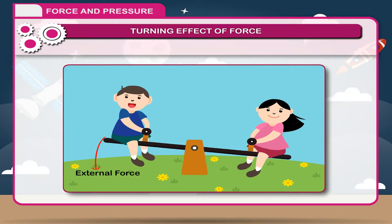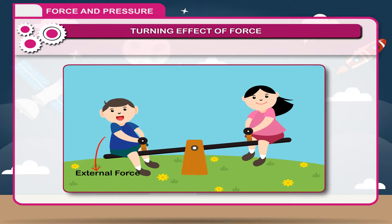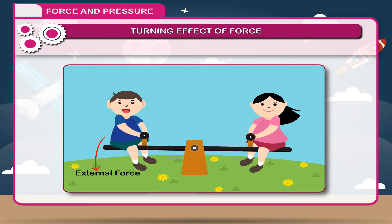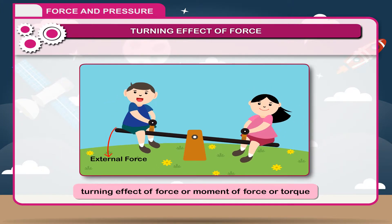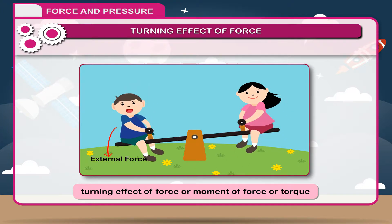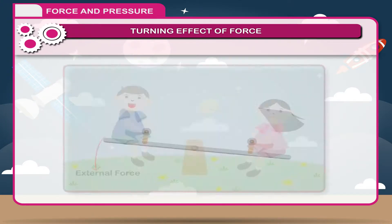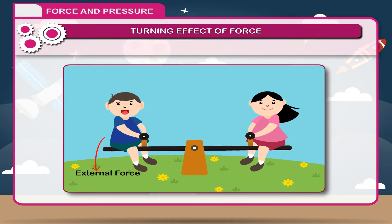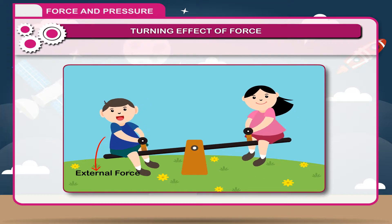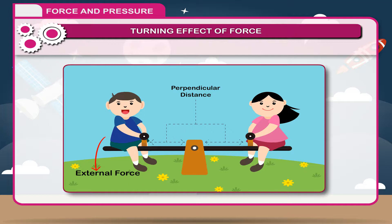Thus, when an external force acts on a body, it has a tendency to rotate the body about a fixed point. This is called the turning effect of force, or moment of force, or torque. Torque is measured by the product of the magnitude of force and the perpendicular distance of the line of action of force from the axis of rotation.